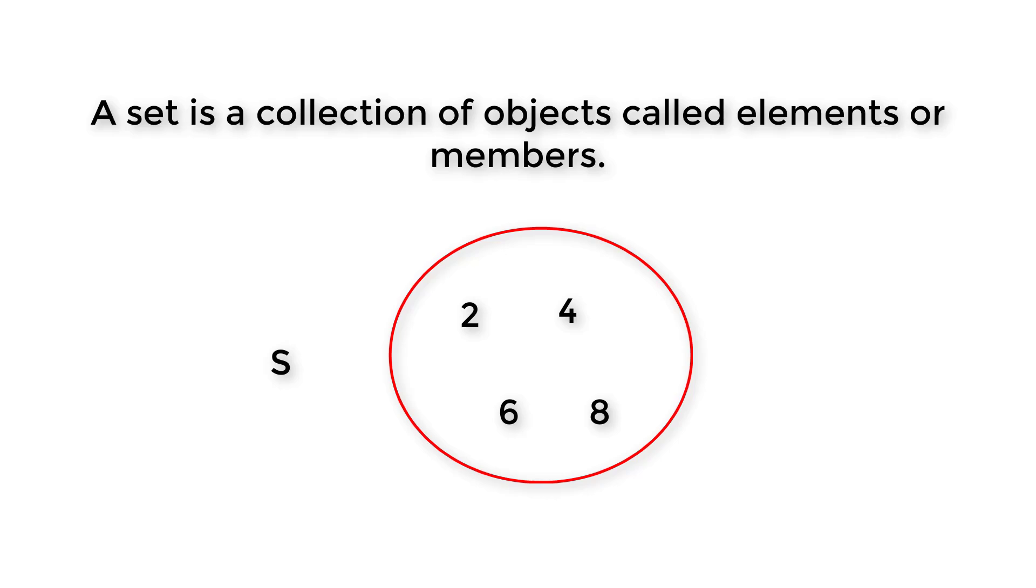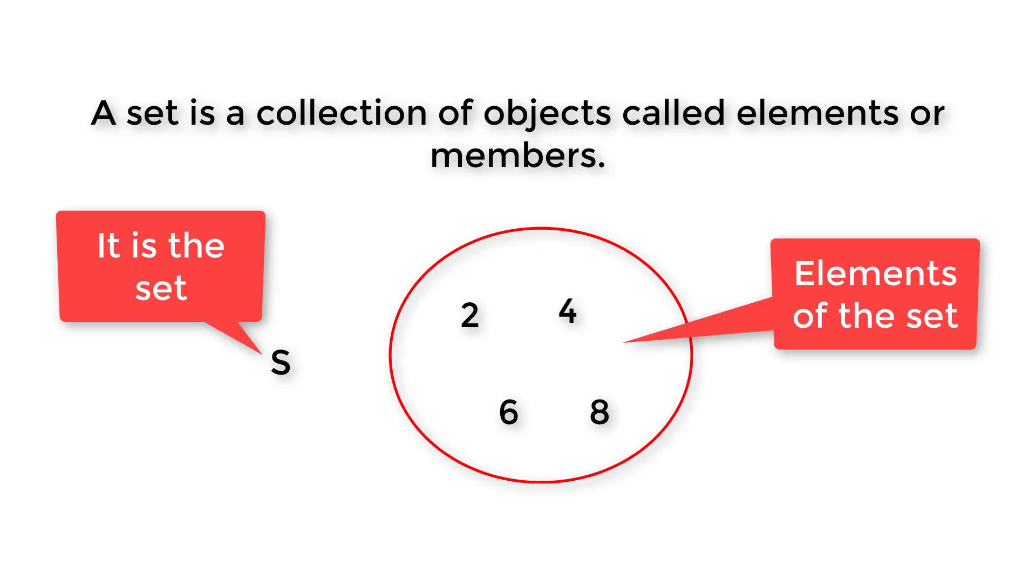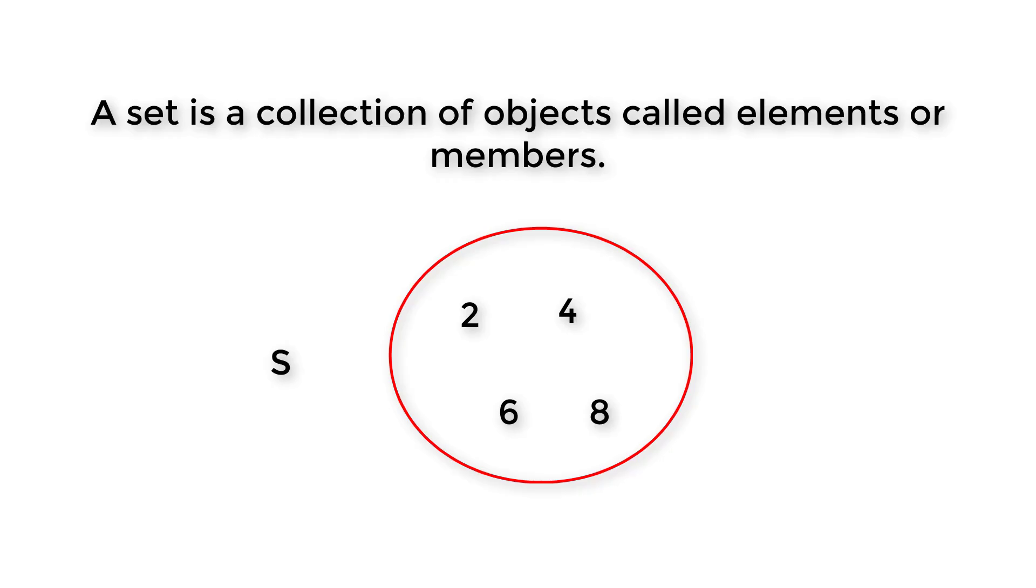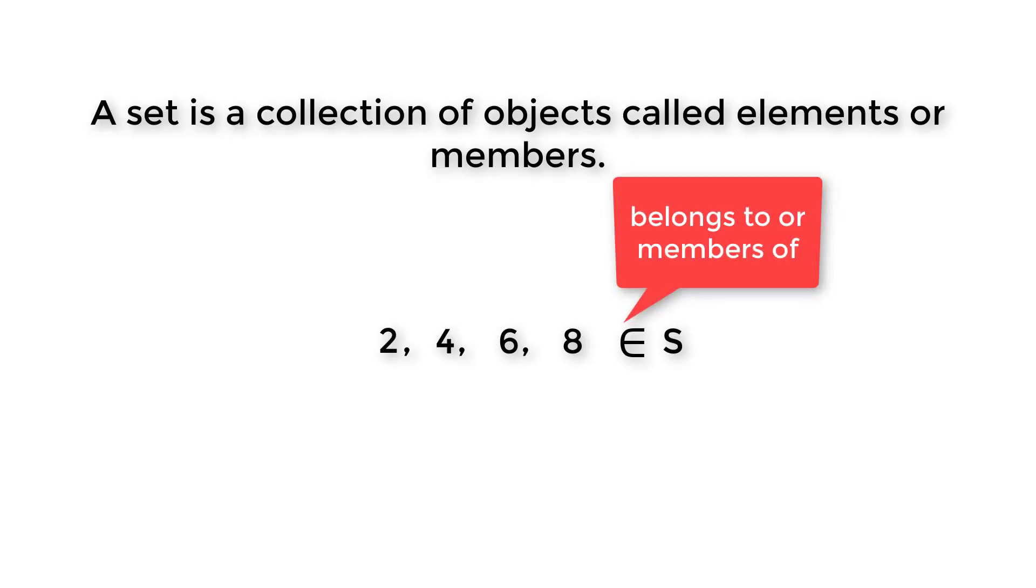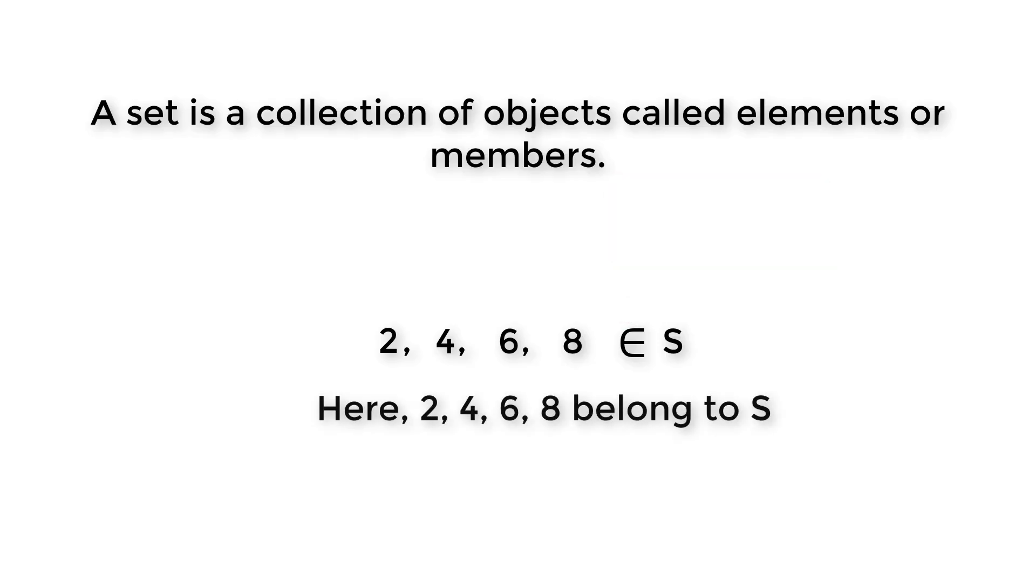Here, this S is the set and these numbers are the elements of this set. Mathematically we express this relation using this symbol. It means belongs to or member of. For example, here 2, 4, 6, 8 belong to S. Furthermore, we can say 1 does not belong to S.